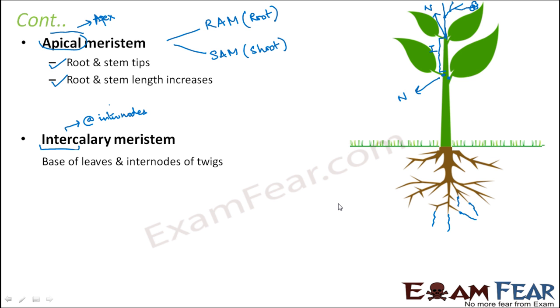Every portion of the plant needs to grow, so new cells need to be formed there. New cells are formed by the meristematic tissue present in those regions — that is why intercalary meristem is found at the internodes.